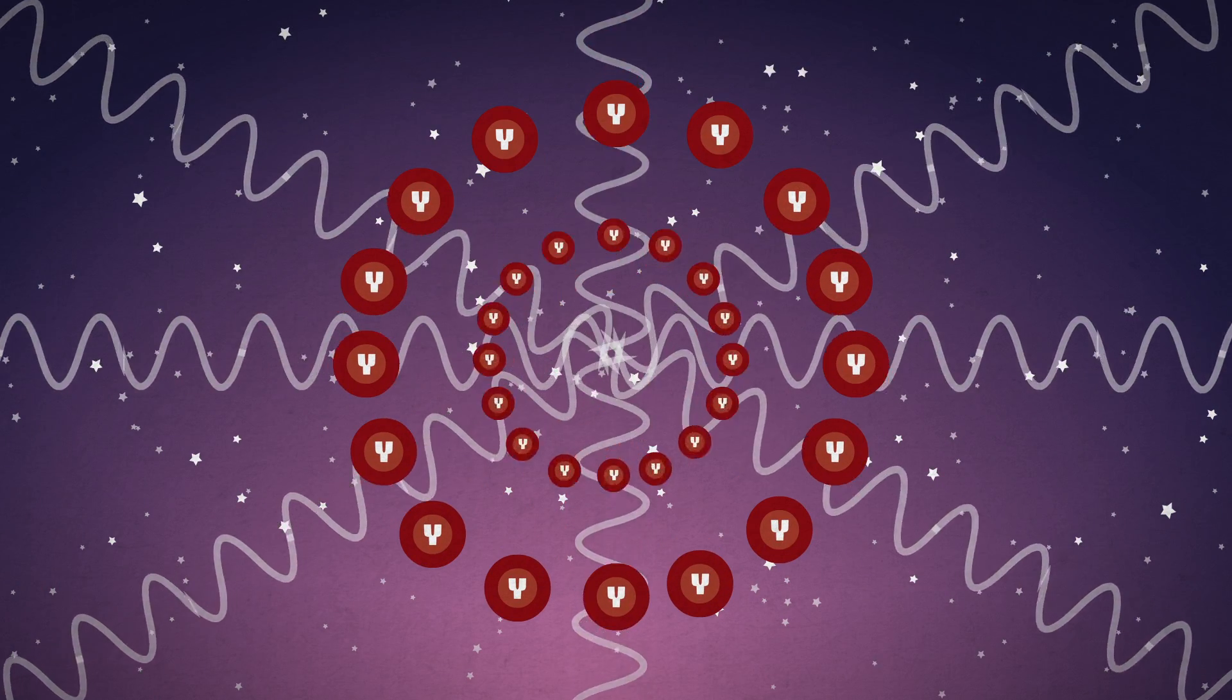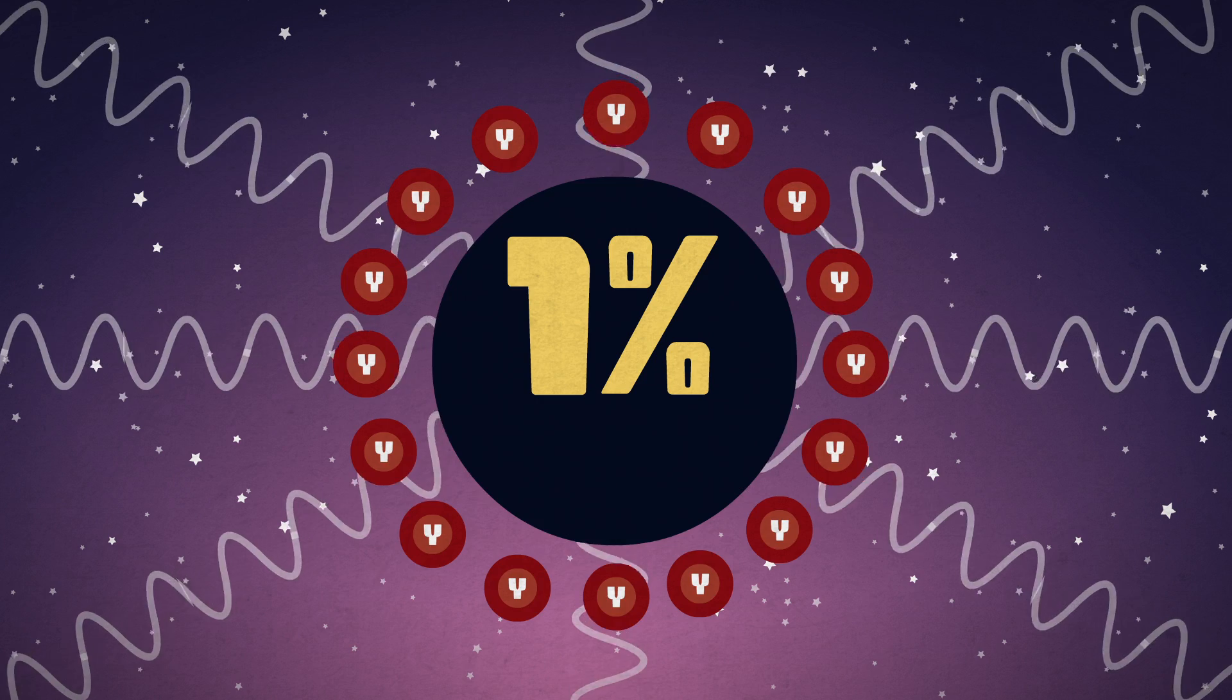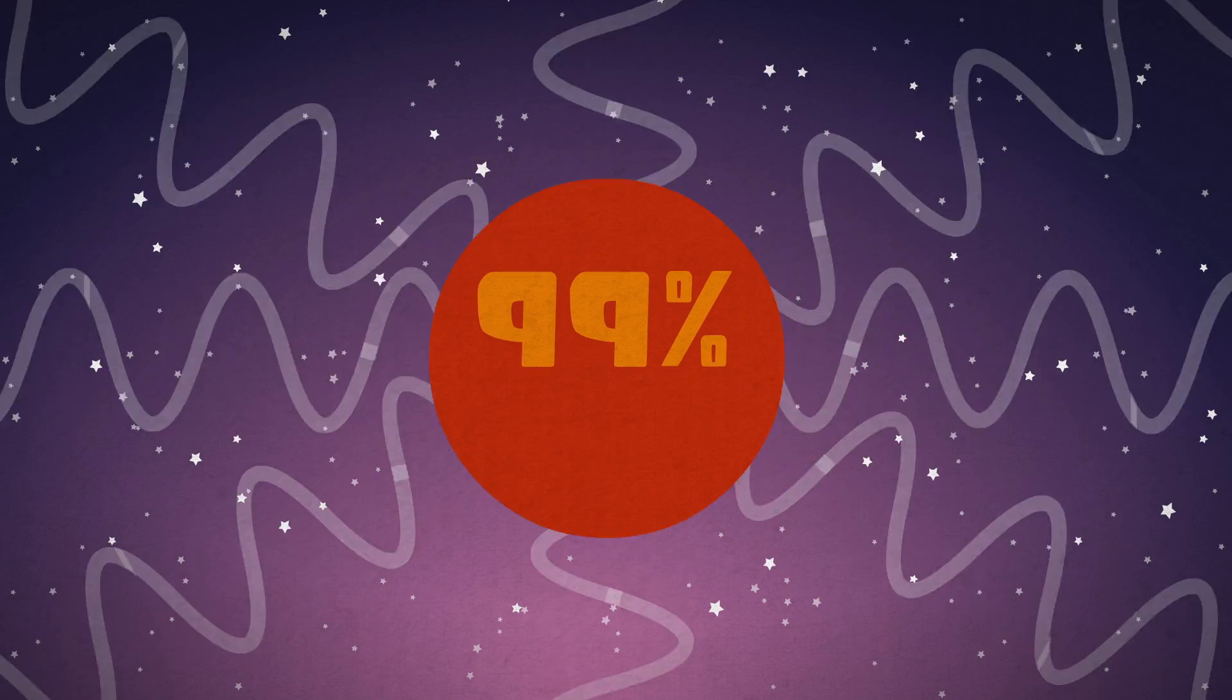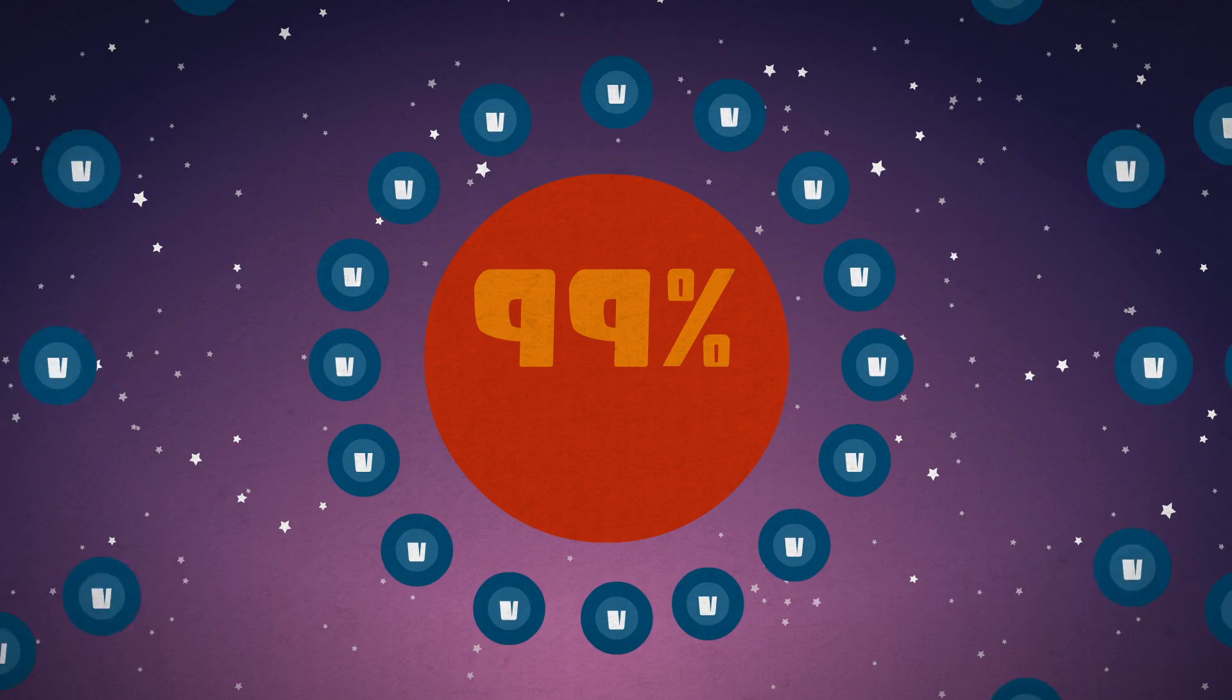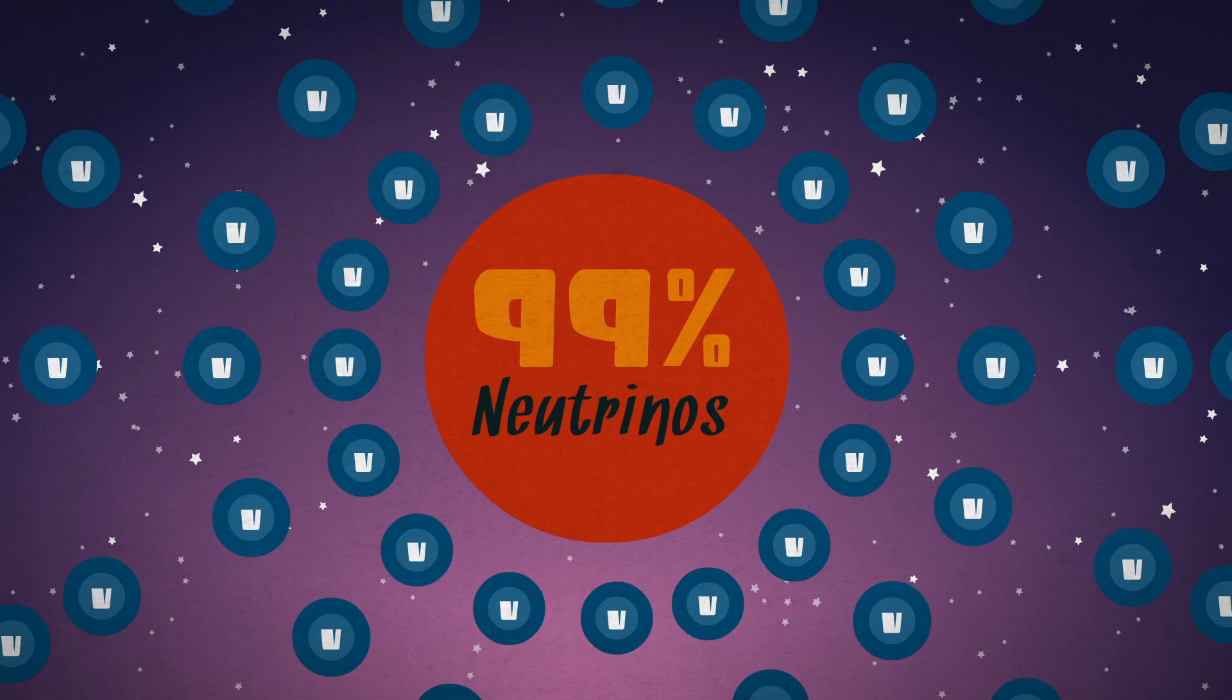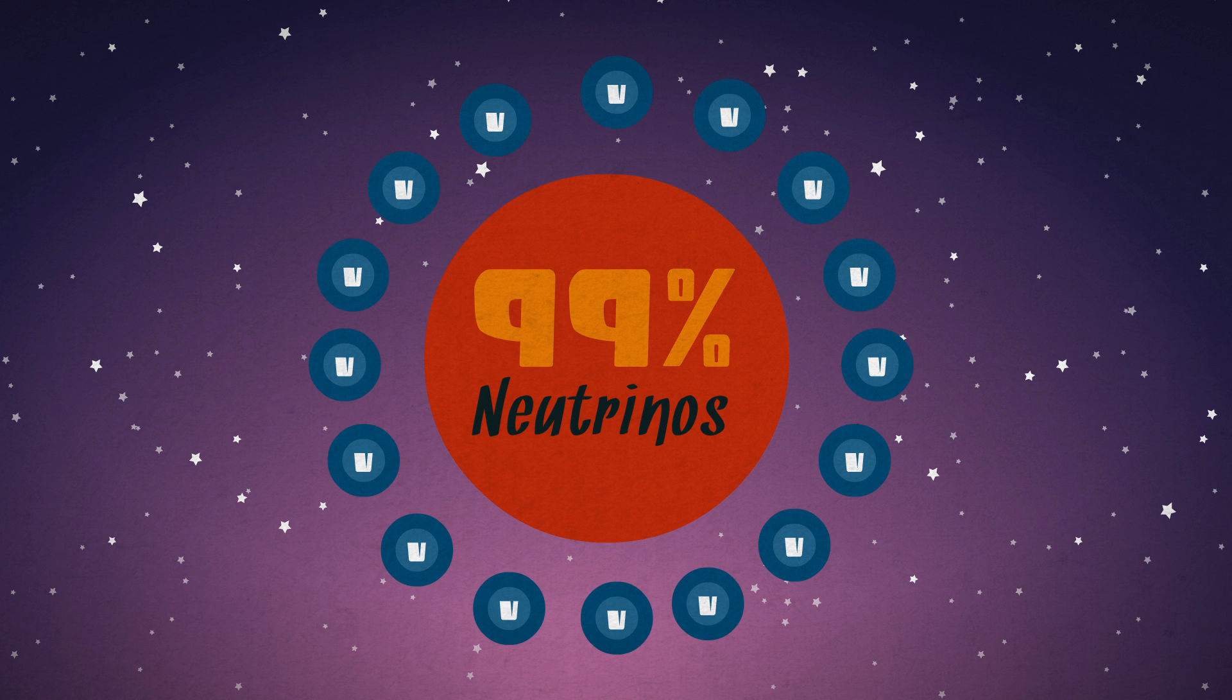In Type 2 supernovae, about 1% of the energy consists of photons, which we know of as light, while 99% radiates out as neutrinos, the elementary particles that are known for rarely interacting with anything.